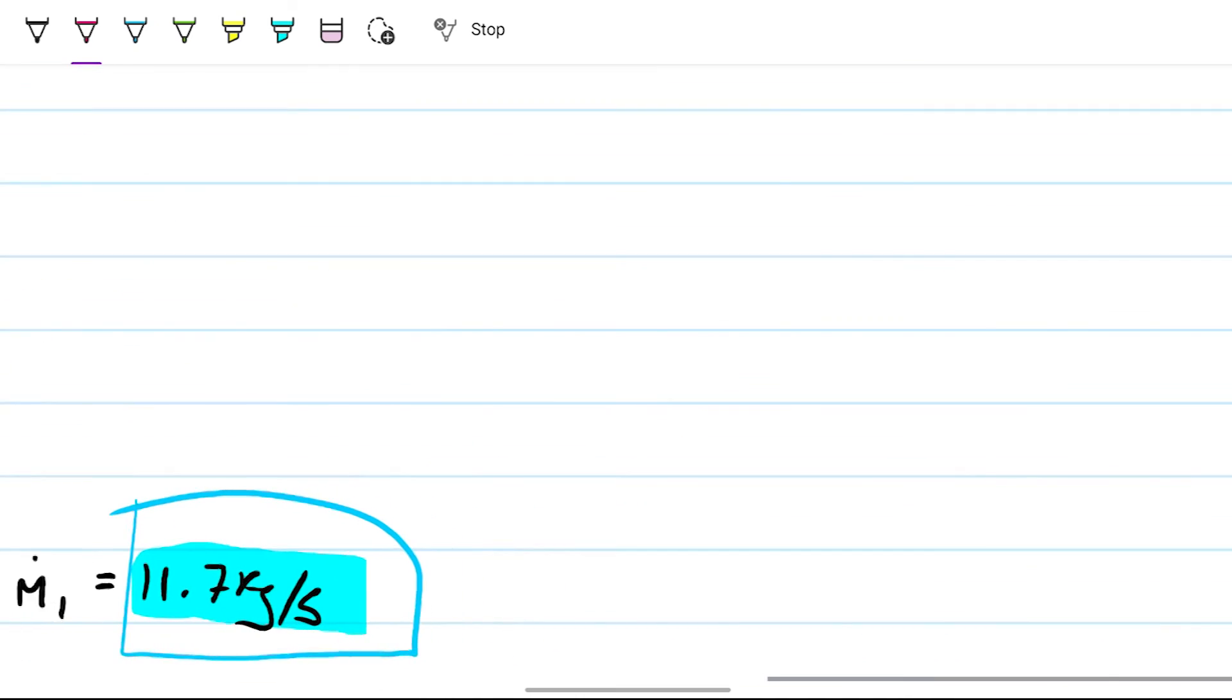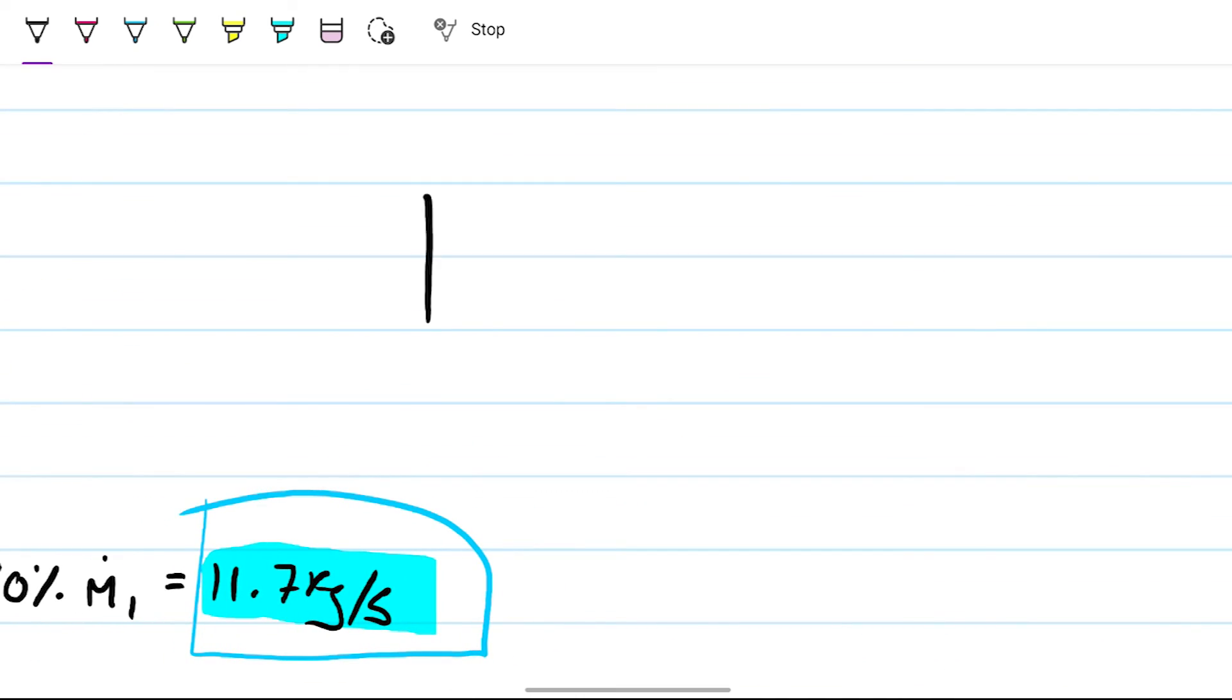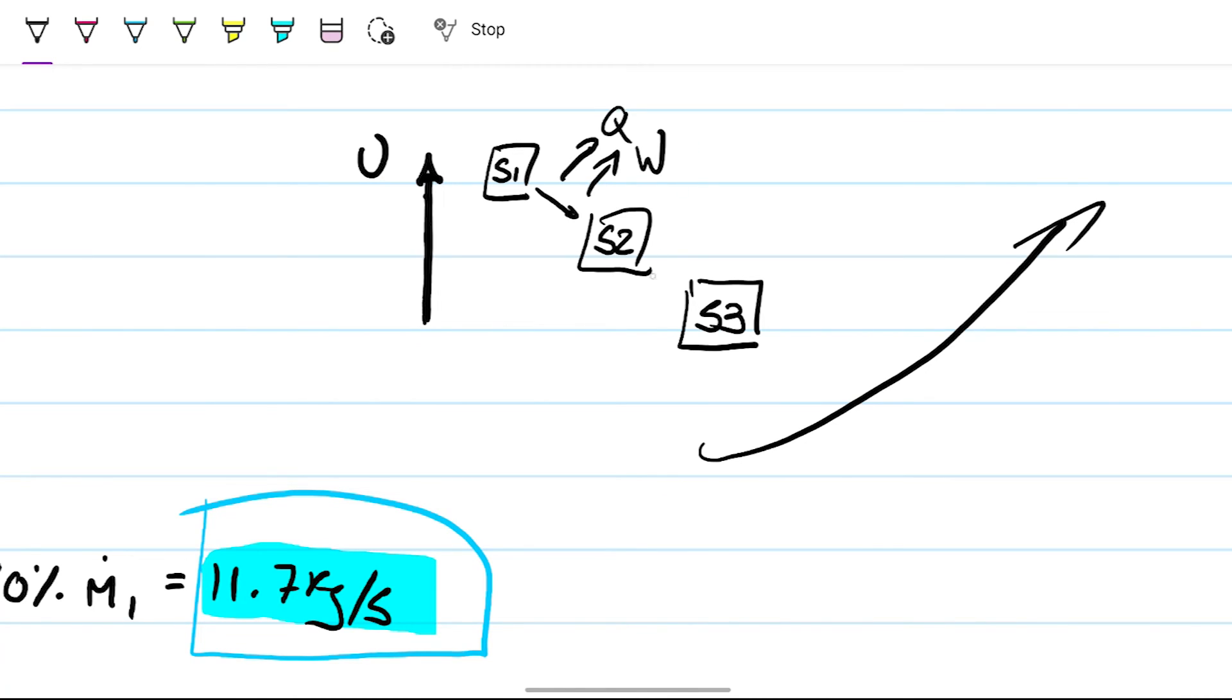So if we were to do our little diagrams, the ones that we talked about in the video on how to understand the first law better, we would have internal energy here. So our state one would be over here, we would have our state two over here, and our state three would be even lower. So as we go from here to here, there's only one thing that can happen: either we're outputting heat or we're outputting work. Same thing here: either we're outputting heat or we're outputting work.